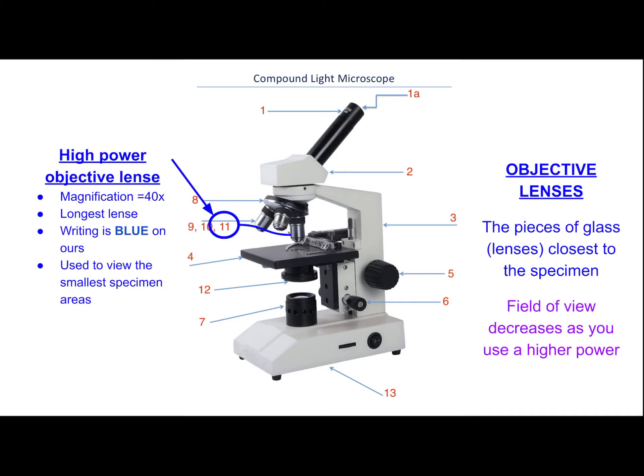Finally, number 13 is the base — the bottom support of the microscope. This is the other part you hold while carrying it. Always use two hands to carry a microscope. Never carry it with one hand, and never ever carry it by the body tube. Use the base (number 13) and the arm (number three) to carry the microscope.